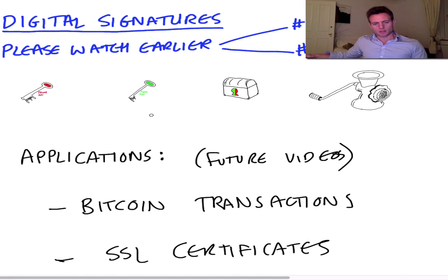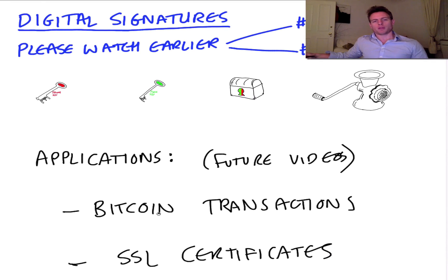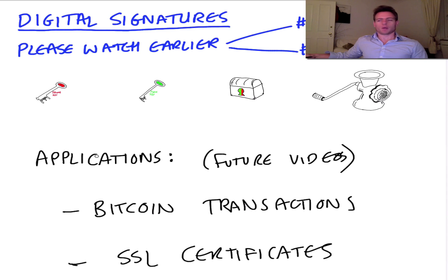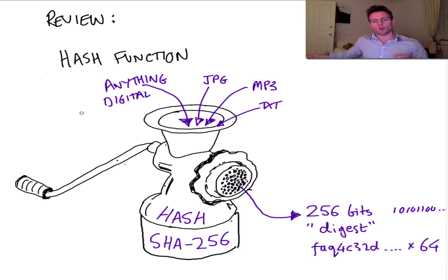Digital signatures are key in applications to do with Bitcoin, blockchain, SSL certificates, and all manner of other things. To be honest, in this day and age I find it incredible that we still sign pieces of paper with a pen, and somehow the law of the land is basically behind a squiggle of ink on a piece of paper. Digital signatures are here to stay, they're growing in usage massively, and this will explain how they work.